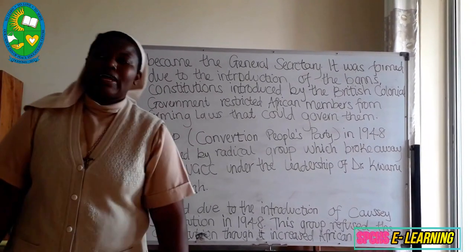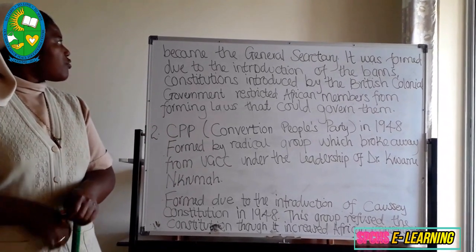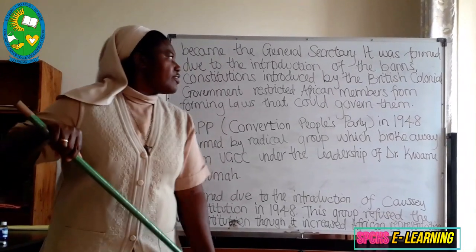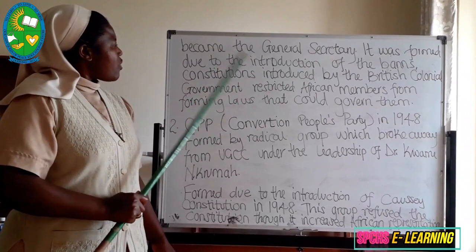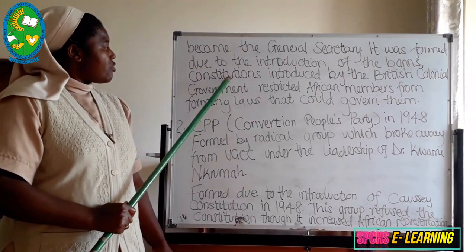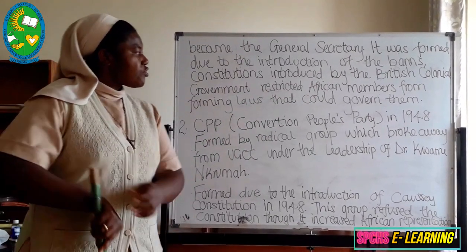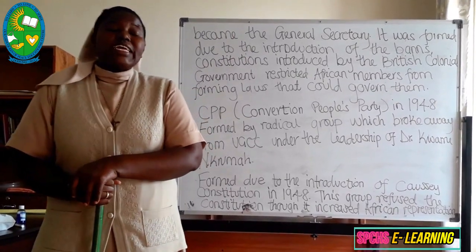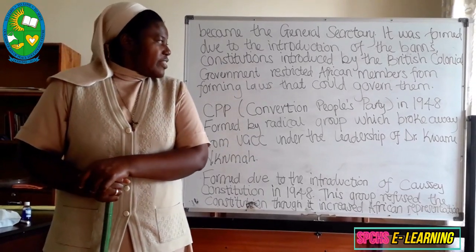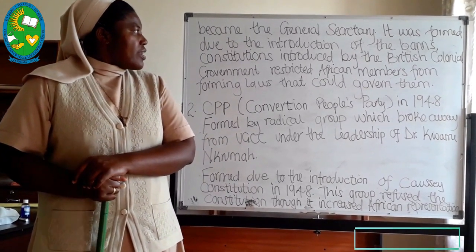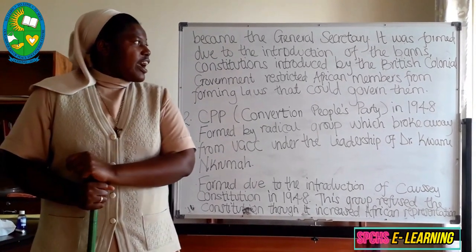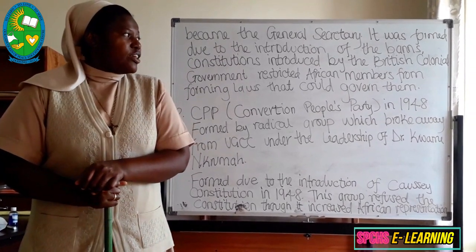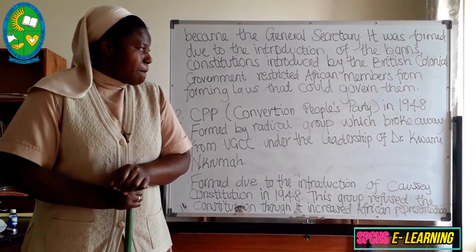The UGCC was founded by Danquah and its general secretary was Kwame Nkrumah. It was formed mainly in response to the Burns Constitution introduced by the British government, which was meant to restrict African members from forming laws that could govern Africans in Ghana. This party therefore opposed the British way of restricting Africans and sought to enable Africans in Ghana to acquire freedom and hence independence.